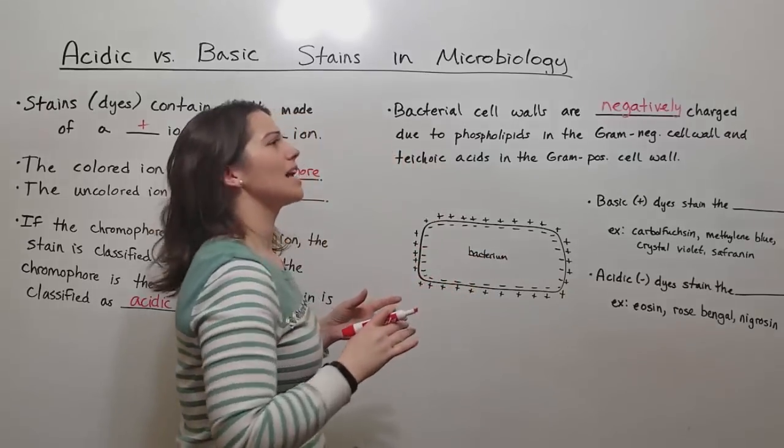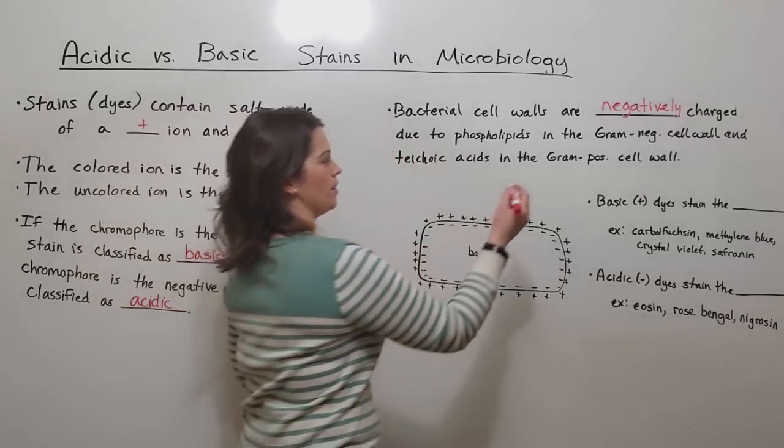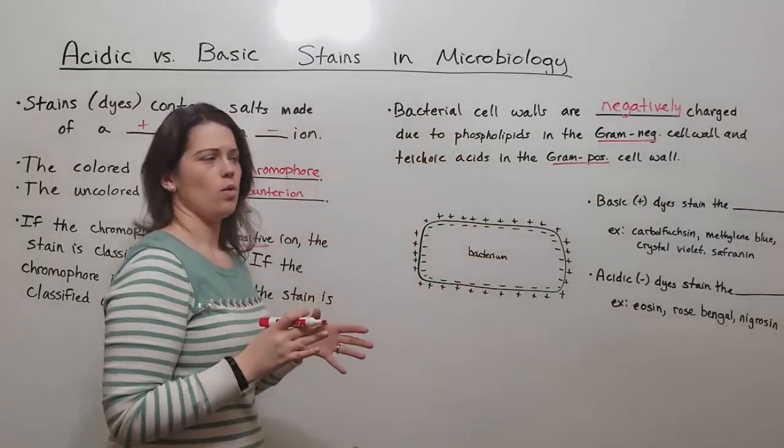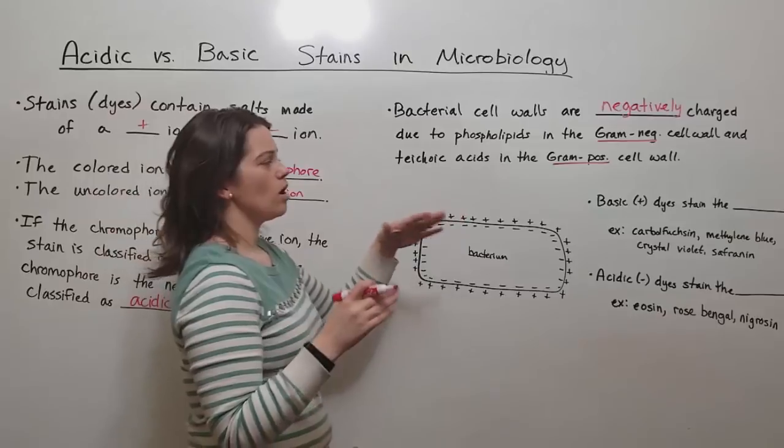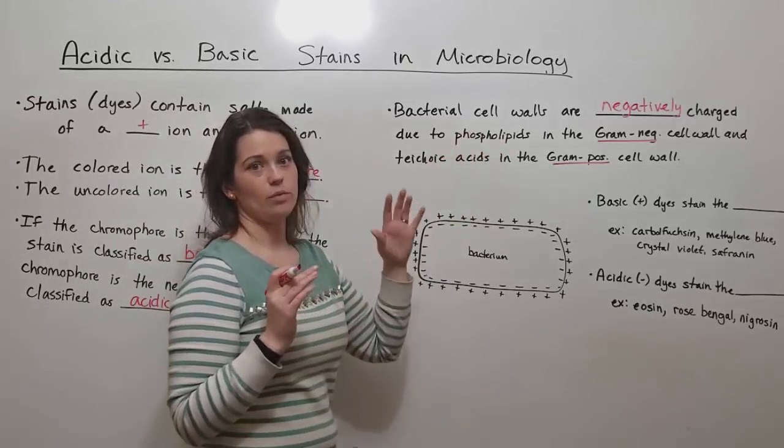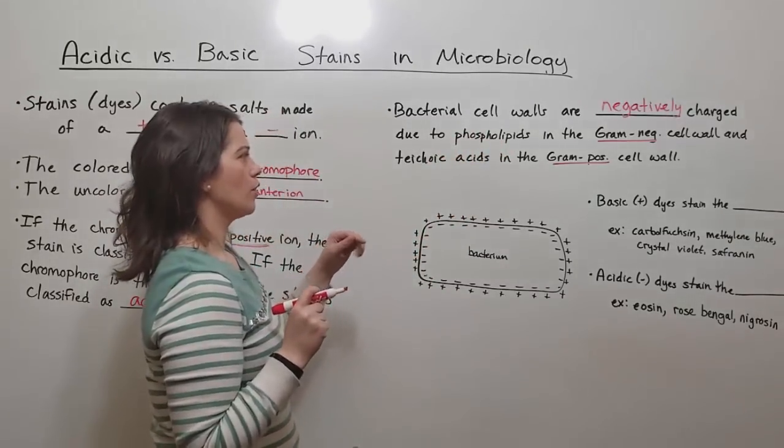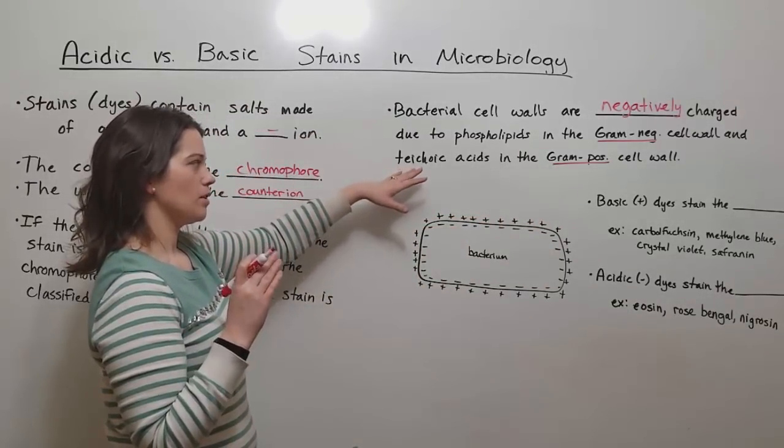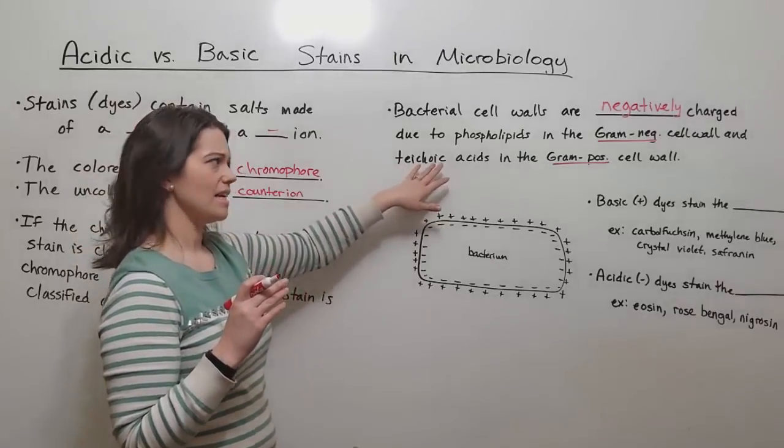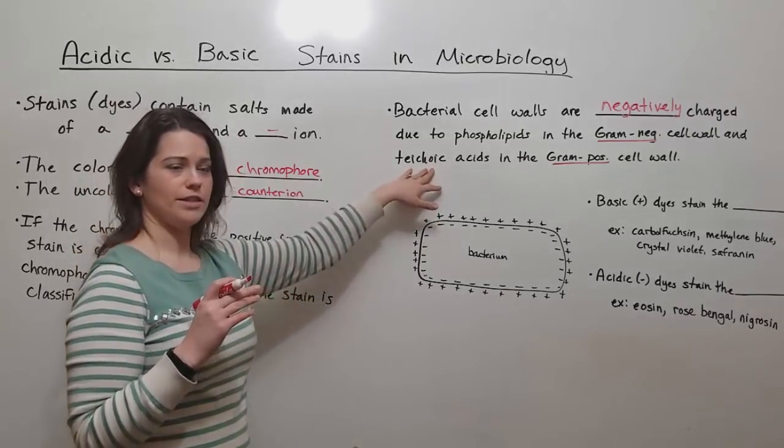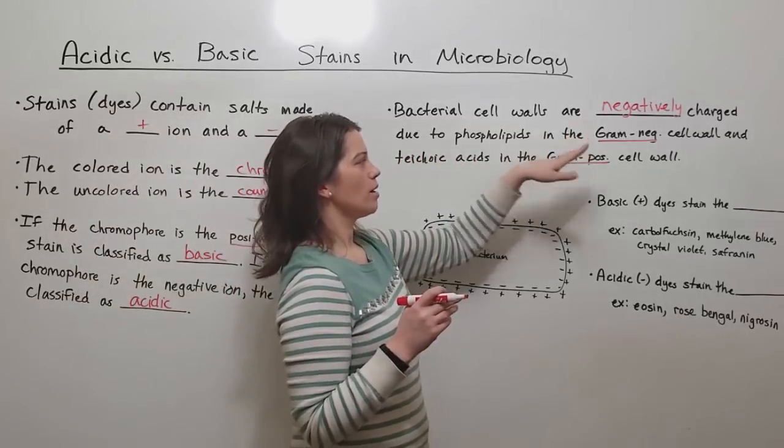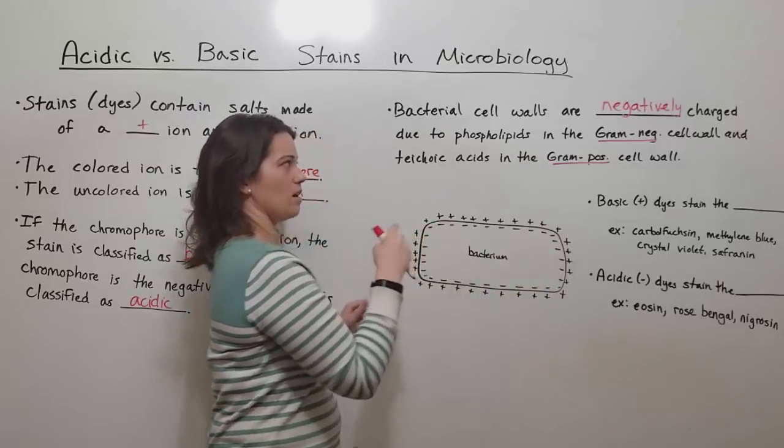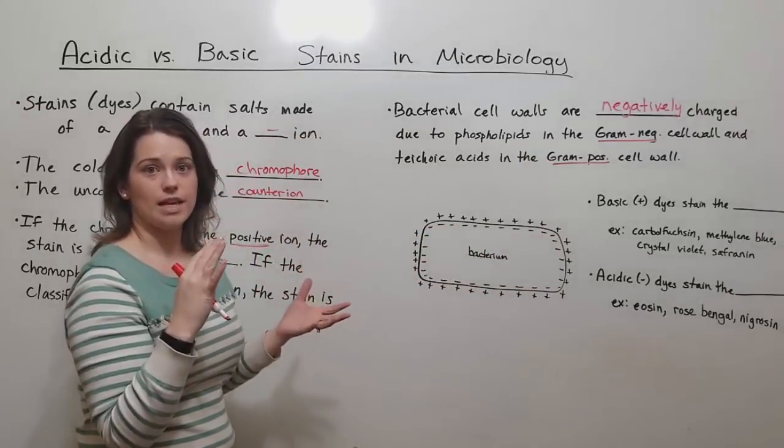It's common to classify bacteria into one of two groups: gram-negative cells and gram-positive cells. They have some differences in their cell wall structures. Gram-negative cell walls have this outer membrane that has a lot of phospholipids in it which are negatively charged. Gram-positive cell walls have this layer of peptidoglycan that's intermixed with teichoic acids. The teichoic acids are also negatively charged. So whether you're talking about gram-negative cells or gram-positive cells, they're going to have negative charges right at the outside of the cell structure.